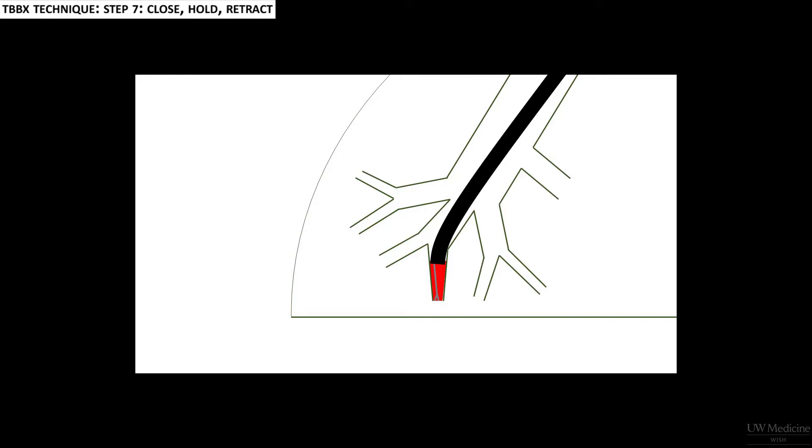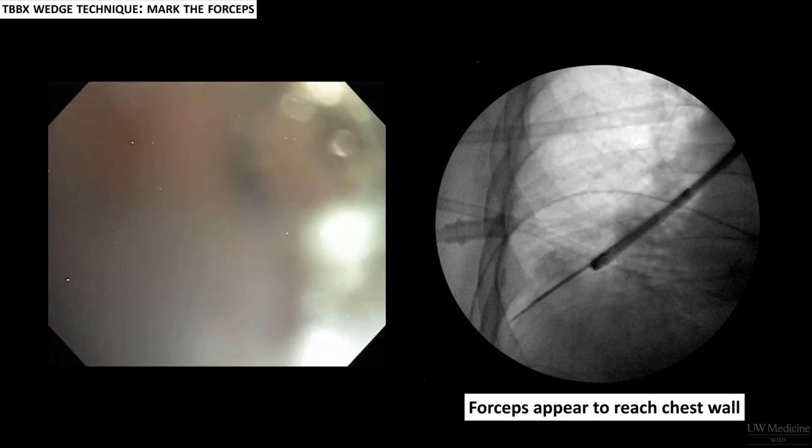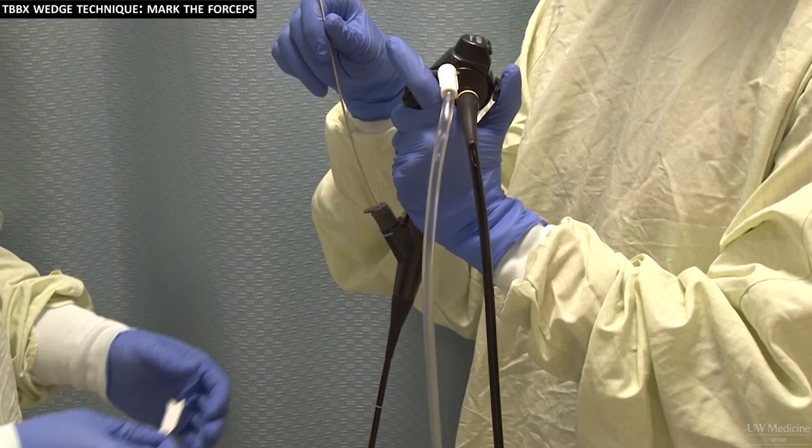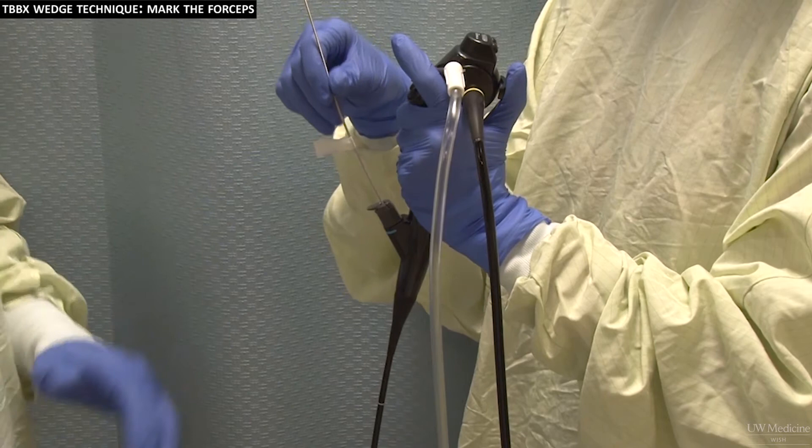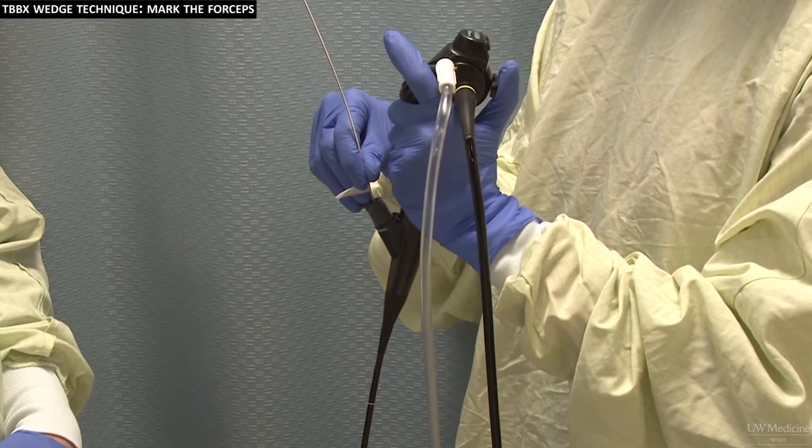The main downside of the wedge approach is that you typically lose vision after taking the first biopsy sample. This makes it hard to know exactly when the forceps have reached the end of the working channel, and it is possible to accidentally pass the forceps further than intended before turning on fluoro. One way to avoid this is to mark the forceps the first time you insert it — when the tip of the forceps has just exited the working channel, mark the shaft with tape about 5 cm from the working channel entrance. You can then use this mark as your signal to turn on fluoro and continue feeding the forceps very gently to feel for resistance.